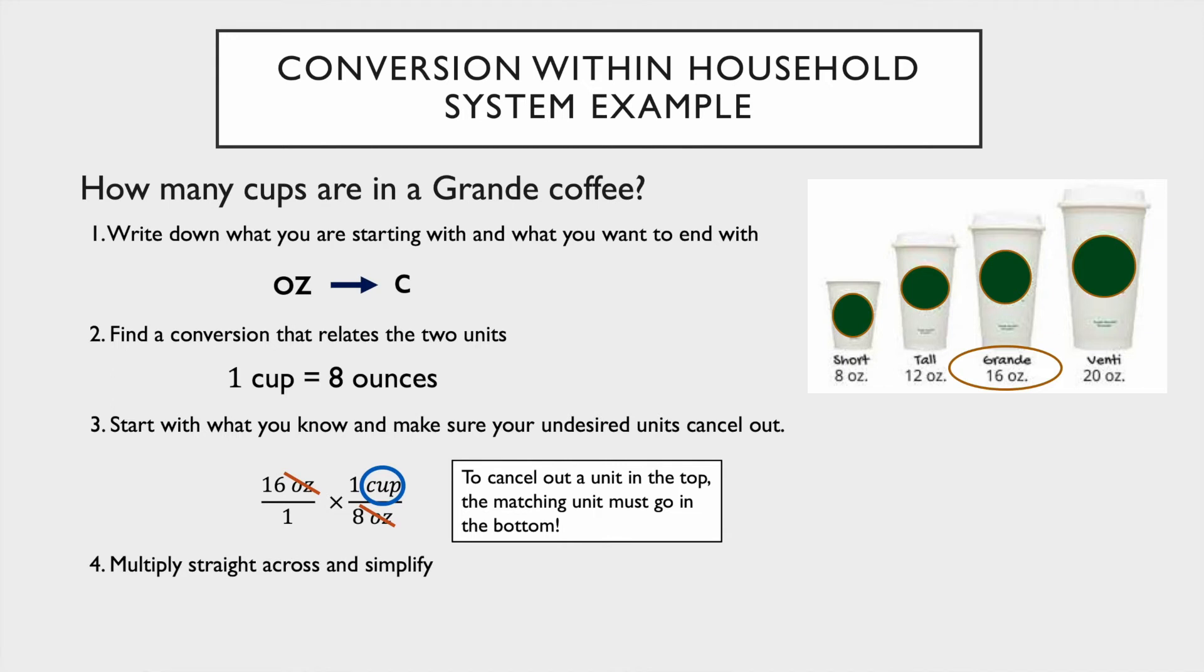Our last step we want to multiply straight across and simplify. We're going to do 16 times one and one times eight, which would give us 16 over eight, which ends up with two cups. So our 16 ounces is two cups.